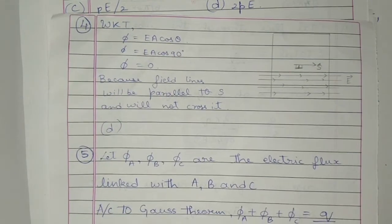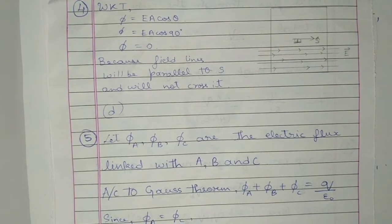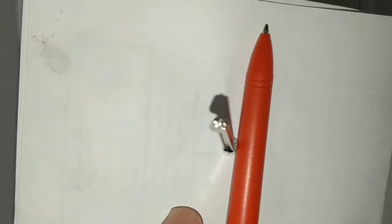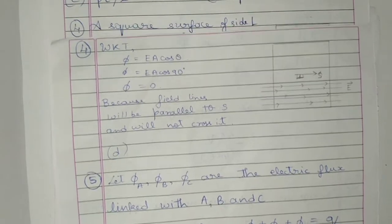Flux is given by EA cos θ, where E is electric field, A is area vector, and θ is the angle between them. The direction of the area vector is always the outward normal from the surface. In this problem, the direction of electric field is over the plane of the paper, so the angle between them is 90 degrees; cos 90 is 0, therefore the flux is 0.